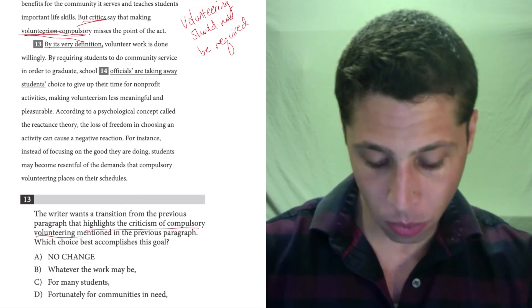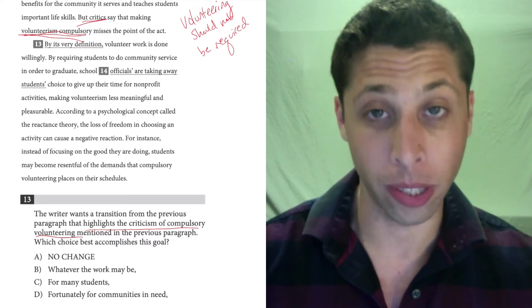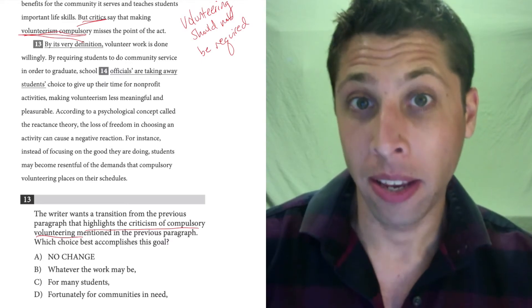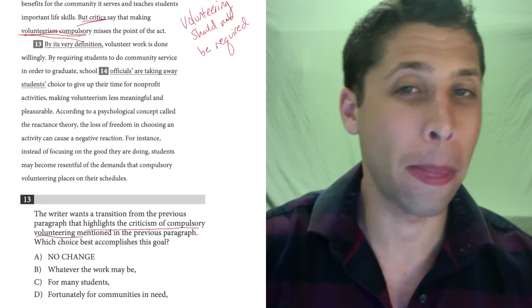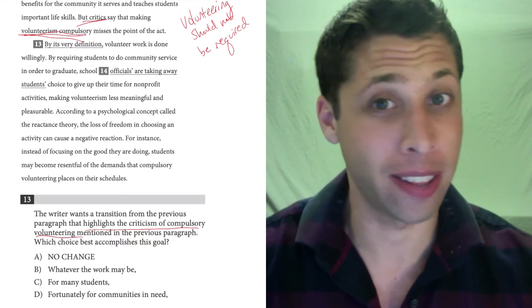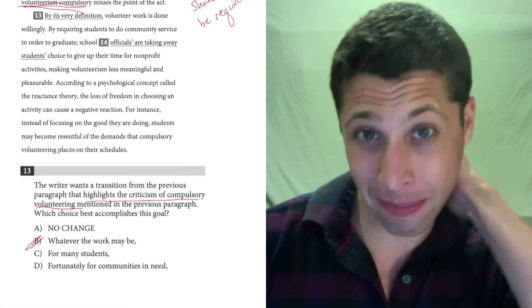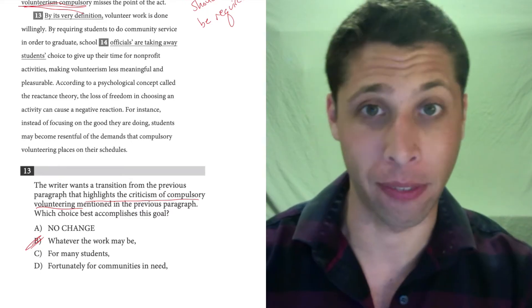Choice B, whatever the work may be, volunteer work is done willingly. Okay. Well, that seems like a throwaway, right? Like we're not talking about specific types of volunteering, so I don't feel like I need to mention that. And that's kind of what choice B is doing here. So this to me is not hitting this idea of requirement that the previous paragraph is focused on.